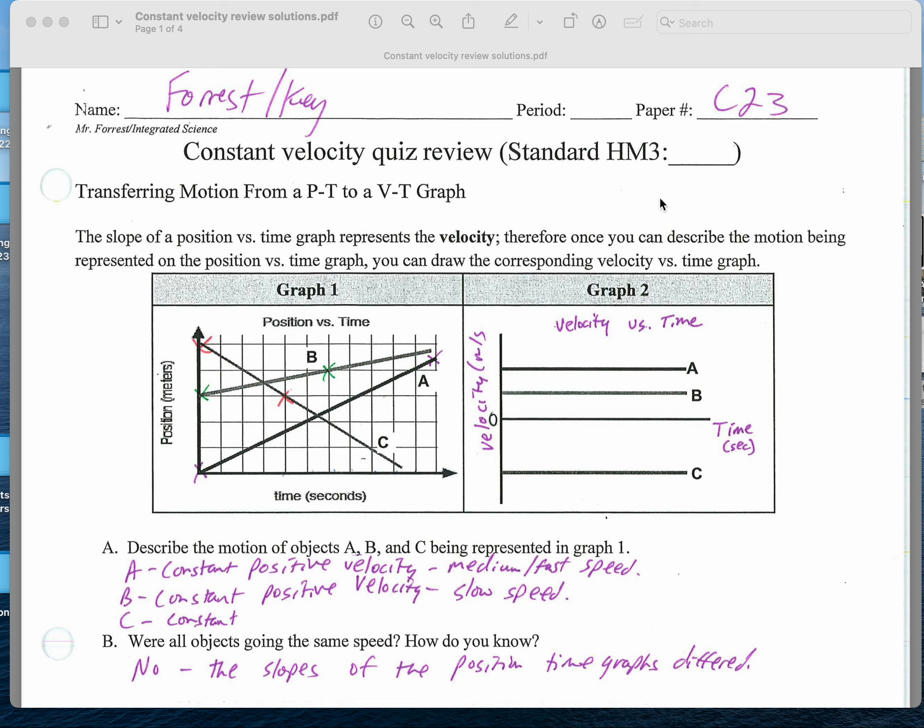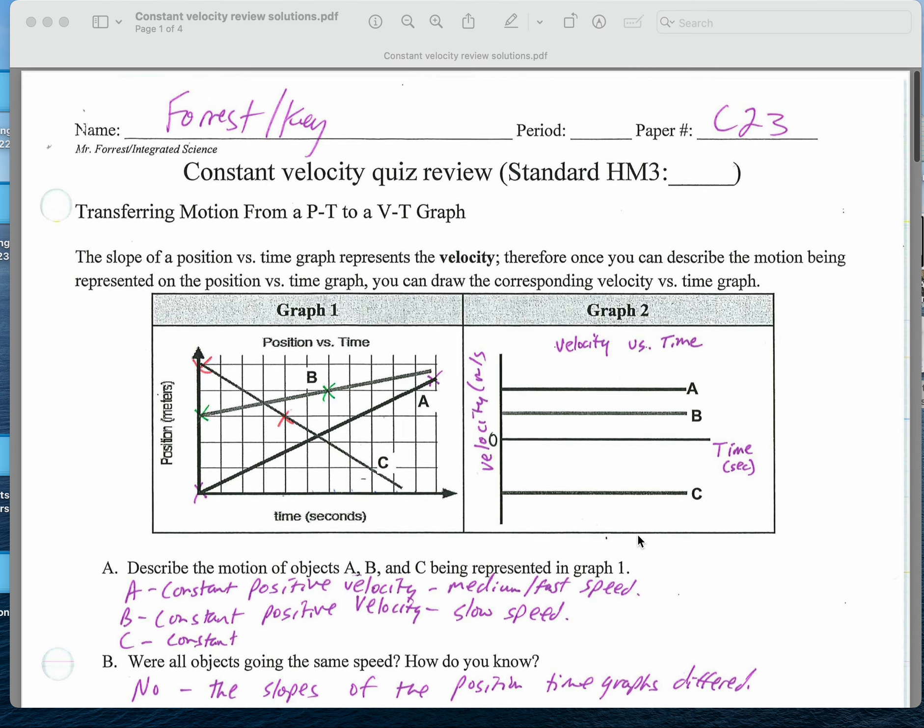Constant velocity quiz review, which you did in class on Friday, March 3rd, especially for my second period class because I'm going to be out with a medical appointment on Monday, March 6th, and we have a quiz on Tuesday, March 7th. So I want to go through all this. It wouldn't be bad for other classes to listen to this also.